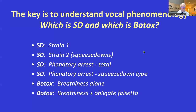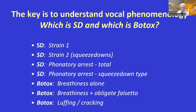A second example would be breathiness plus what I call obligate falsetto — the person has no option. They can try all day to stay in chest voice, but they get a mini-mouse kind of voice, still running out of air more often. That's also weakness from Botox. And then there's luffing and cracking, where the voice is somewhat in chest voice but also cracking up into falsetto. That's a Botox effect, not SD. In both Botox cases I might suggest a lower dose; in the first four SD examples I might suggest a higher dose, even though all six are being called vocal weakness.